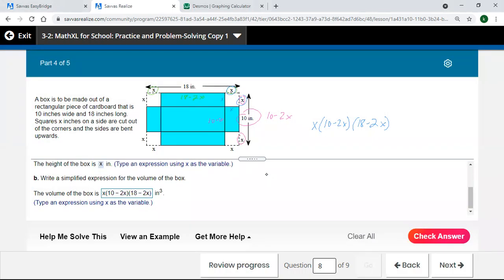Once written out as a polynomial, x times 10 minus 2x times 18 minus 2x would be my volume. Yeah, we're going to have to multiply that all out. So let's take the x first times here, which would be 10x minus 2x squared, then take that times my 18 minus 2x. So I've got 180x there, I've got a negative 36x squared here, I've got a negative 20x squared there, and then negative 2x squared times negative 2x would be positive 4x cubed right there.